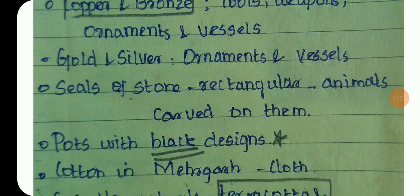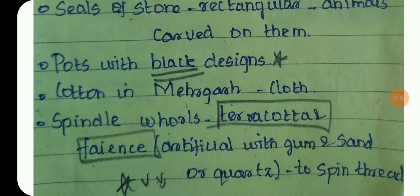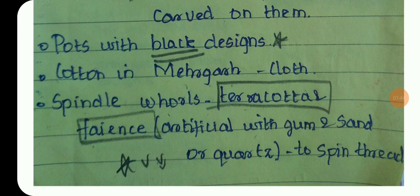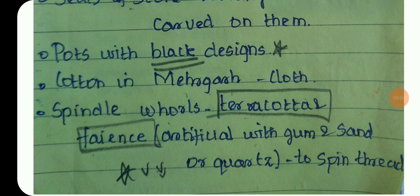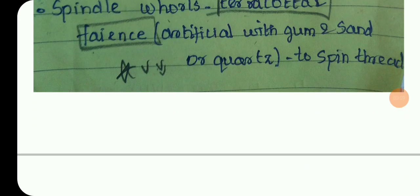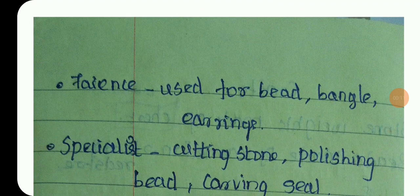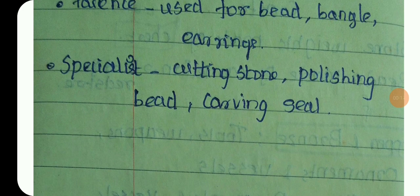Pottery is made with black design on a red background. Cloth is made using a spindle. Artificial sand and artificial gum-based materials were also used.